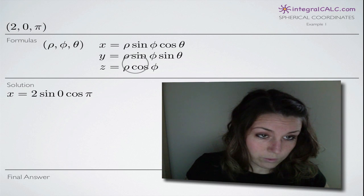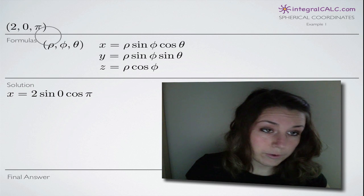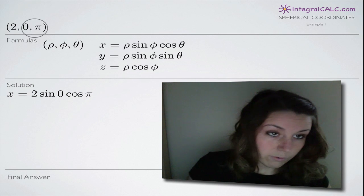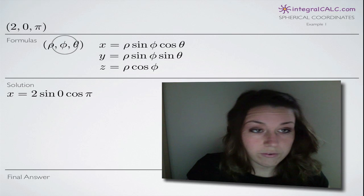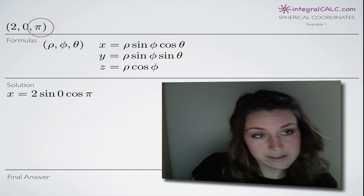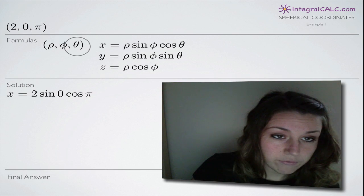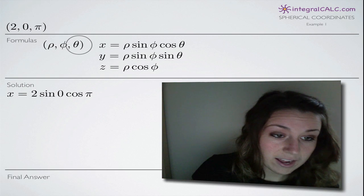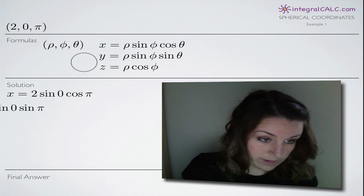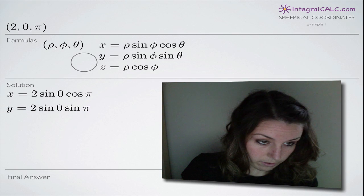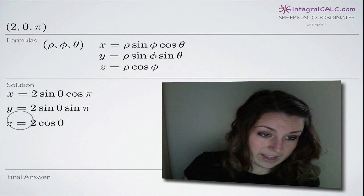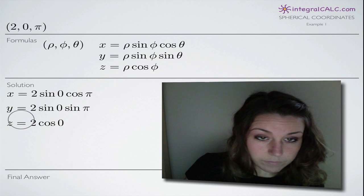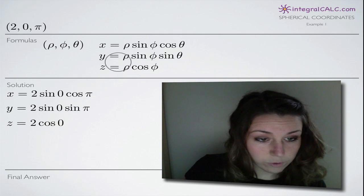So when we plug in 2 for rho, 0 for phi, and pi for theta, we'll get these three equations for x, y, and z using these formulas.